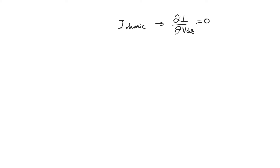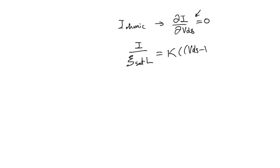This gives us the inflection point of the current, which is the same approach used to find the pinch-off point in a long channel transistor. When we perform this differentiation for a transistor with a nonlinear field-velocity relationship, we get: I over (ESAT · L) equals K times (VGS minus V_threshold minus VDS).